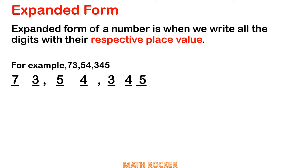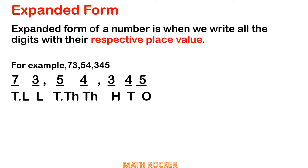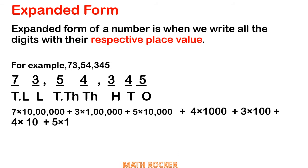The first step is to write the place value: ones, tens, hundreds, thousand, ten thousand, lakhs, ten lakhs. Then we write the number along with its place value: 7 into ten lakhs, plus 3 into lakhs, plus 5 into ten thousand, plus 4 into thousand, plus 3 into hundred, plus 4 into ten, plus 5 into 1.